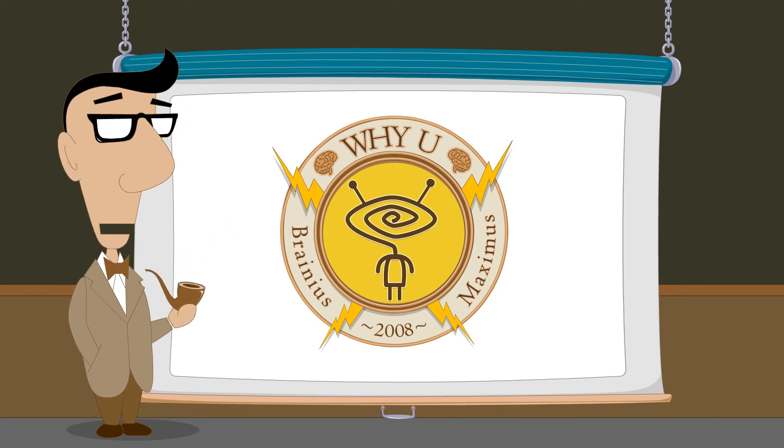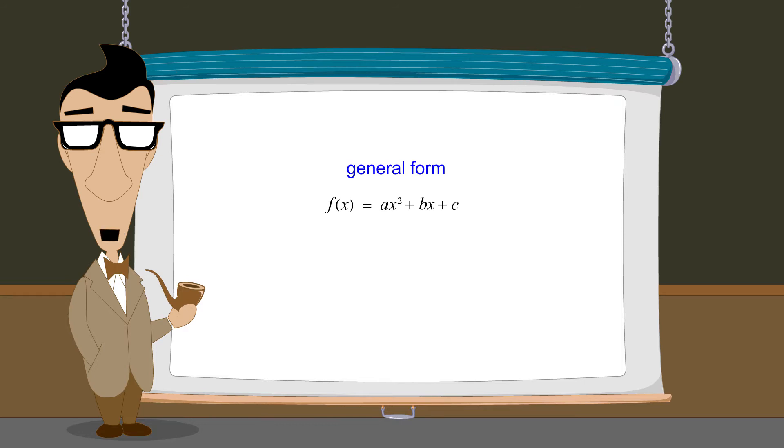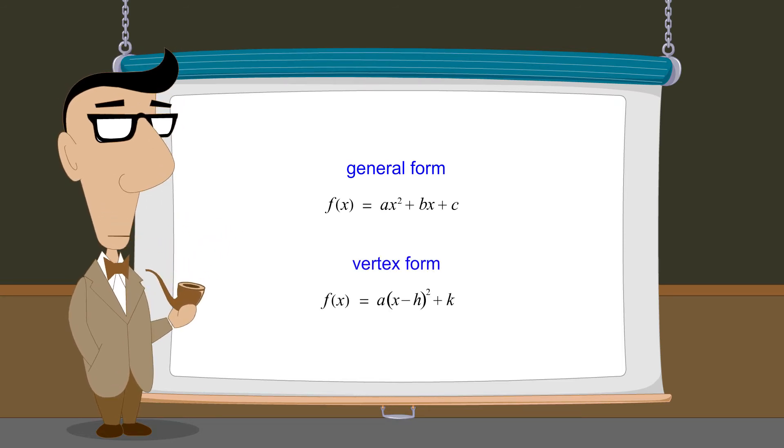In the last several lectures, we have seen that quadratic functions can be written in general form and vertex form. No matter in what form they are written, the graphs of quadratic functions are always parabolas.